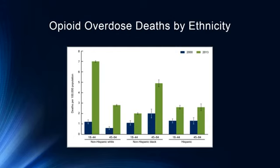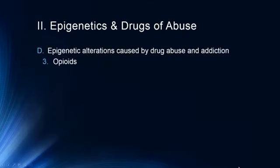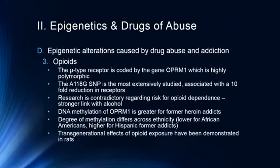The research isn't specific enough yet to explain these patterns definitively. There are also transgenerational effects of opioid exposure demonstrated in rats — we need to understand how use of heroin and other opioids can affect offspring throughout their lifetime. We simply don't have the data yet, as this research is still very early.